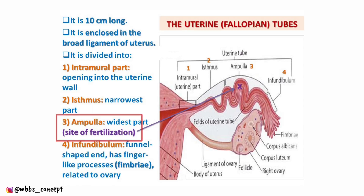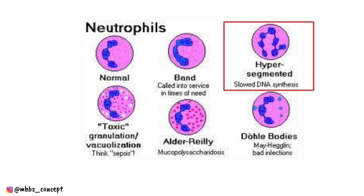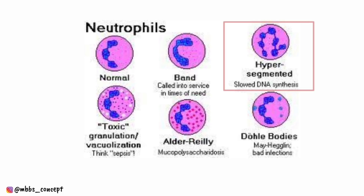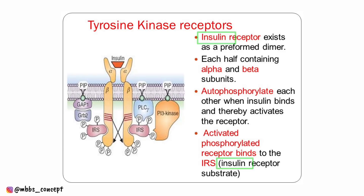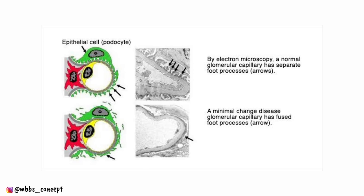Another question asked about the site of fertilization — it is the ampulla. Another question asked about hypersegmented neutrophils — these are seen in megaloblastic anemia, which is due to vitamin B12 deficiency.